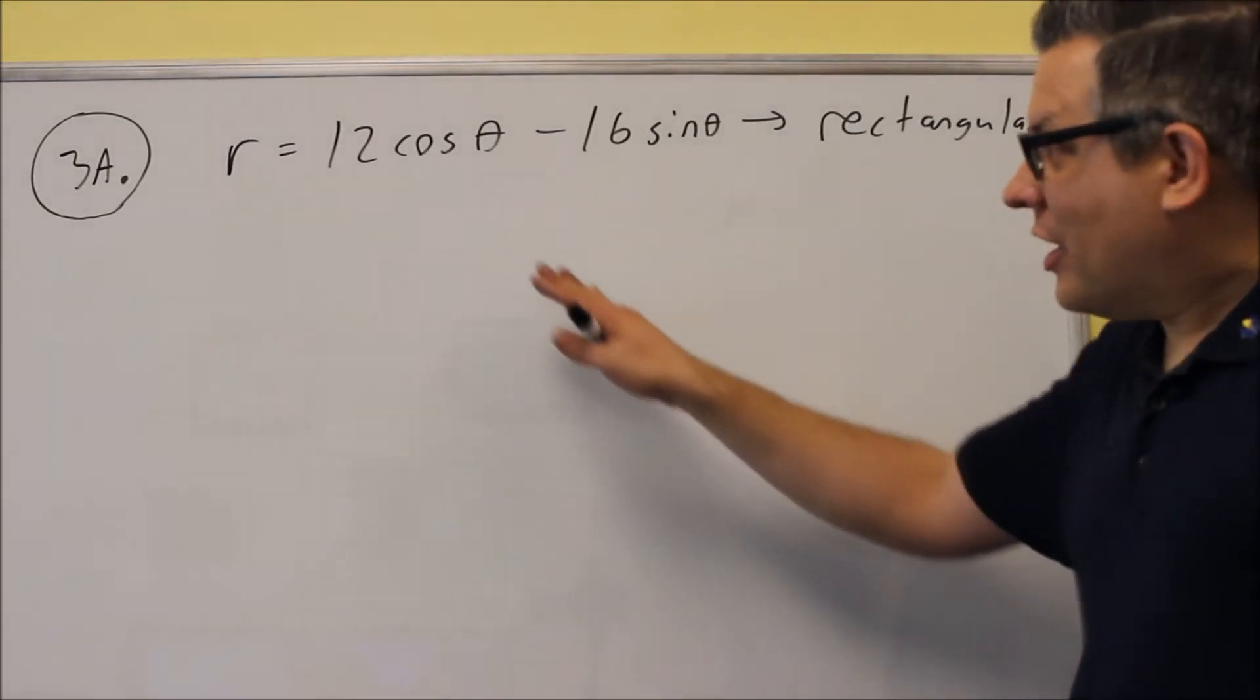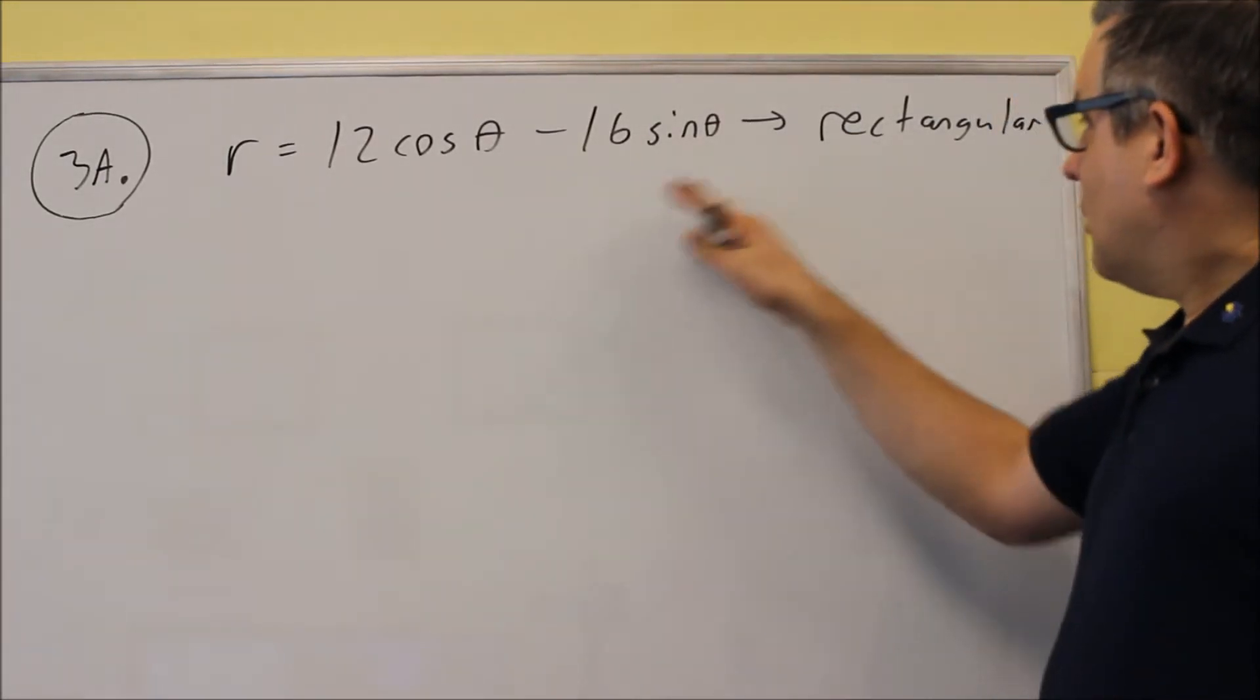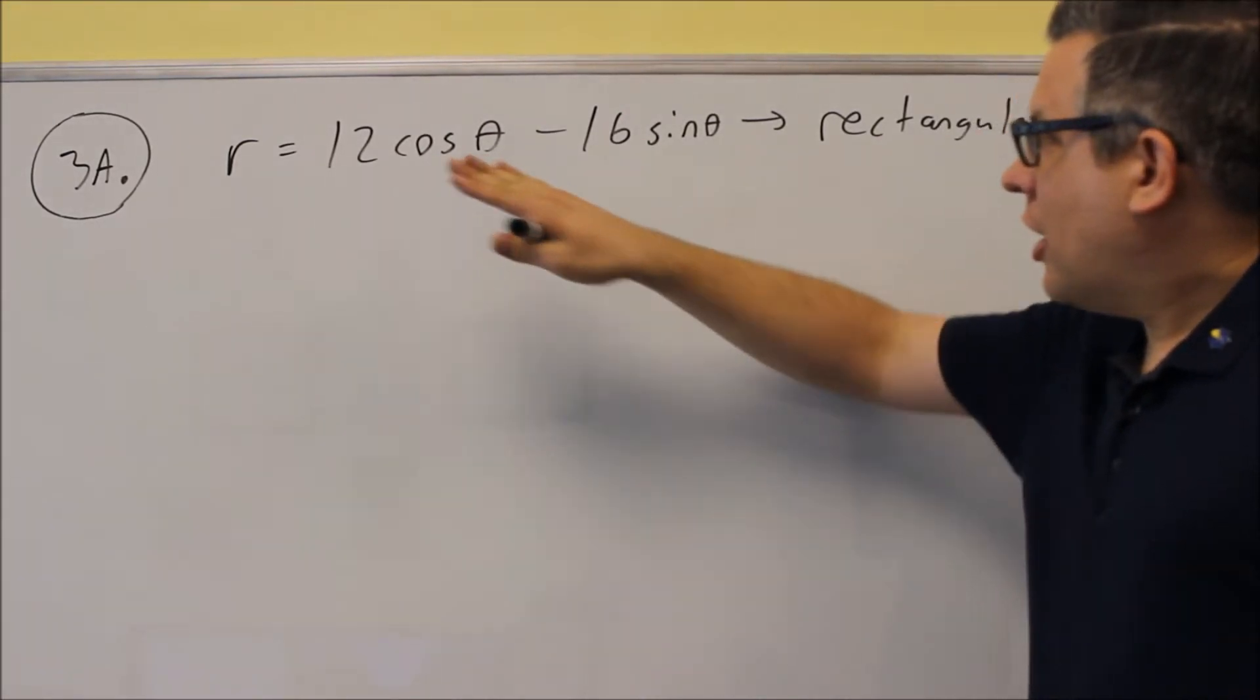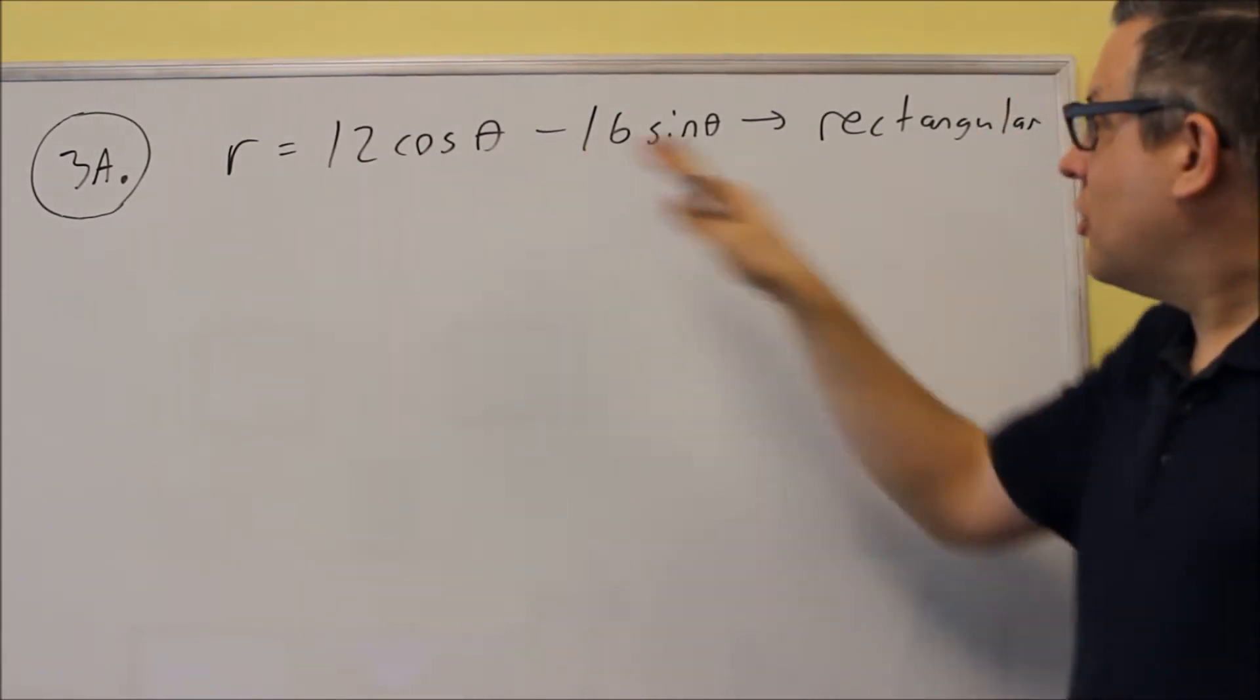Okay, for 3a, we're converting an equation into rectangular. So if it gives it to you this way, going from the polar, which is what this is in, into rectangular.